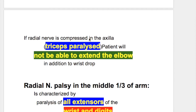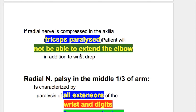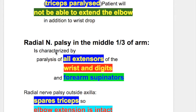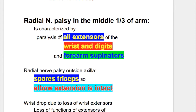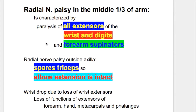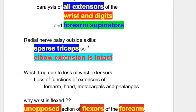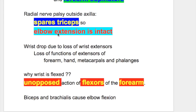If the Radial Nerve is compressed in the axilla, then the triceps is also paralyzed, so the patient will not be able to extend the elbow in addition to having a wrist drop. In Radial Nerve Palsy of the middle third of the arm, there is paralysis of all extensors of the wrist, digits, and forearm supinators. Radial Nerve Palsy outside the axilla spares the triceps, so elbow extension is intact. This is the key difference: palsy inside the axilla causes inability to extend the elbow, while palsy outside the axilla leaves elbow extension intact.